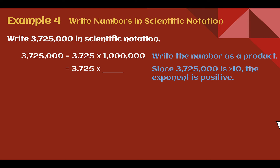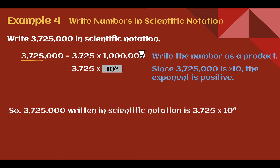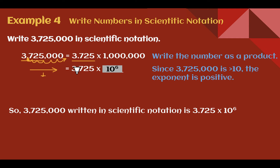Example 4: write 3,725,000 in scientific notation. They are showing the number written as a product — taking the digits 3725 and putting it into proper format. Since this was 3,000,000, we know we're multiplying by a million, so it's 3.725 times 1,000,000, and 1,000,000 is written as 10 to the sixth power. Method 2 — move the decimal: my factor has to be 3.725 to put it between 1 and 10, then I move it six places in the positive direction to reach the end. So 3.725 times 10 to the sixth.